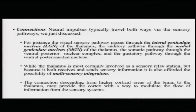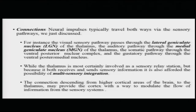Neural impulses typically travel both ways via the sensory pathways. For instance, the visual sensory pathway passes through the lateral geniculate nucleus of the thalamus. The auditory pathway passes through the medial geniculate nucleus of the thalamus. Similarly, the somatic pathway passes through the ventral posterior nuclear complex and the gustatory pathway passes through the ventral posterior medial nucleus. These are the different junctions in the brain where the sensory pathways converge and relay information to higher regions of the brain.